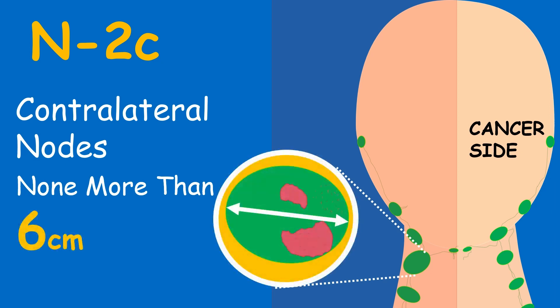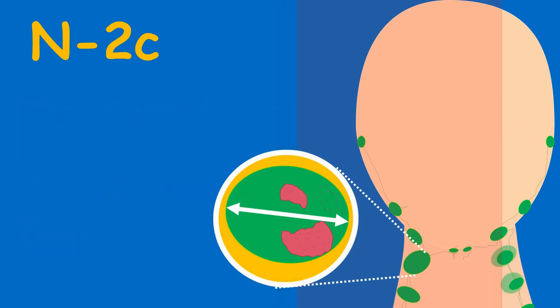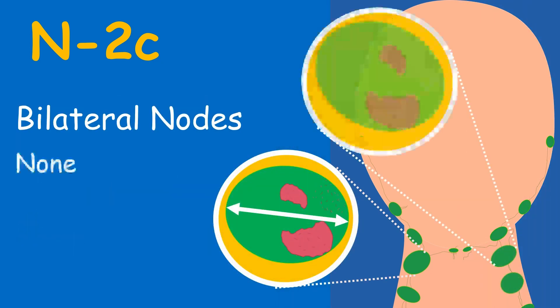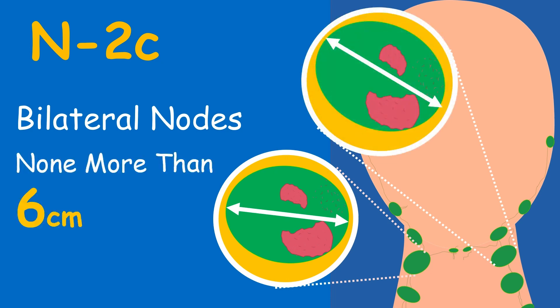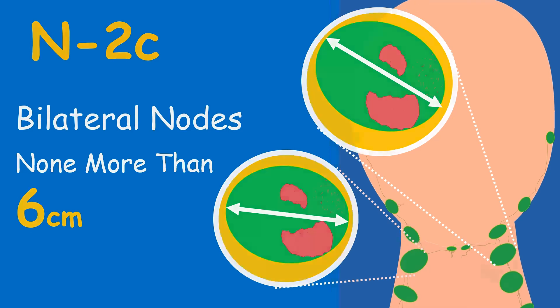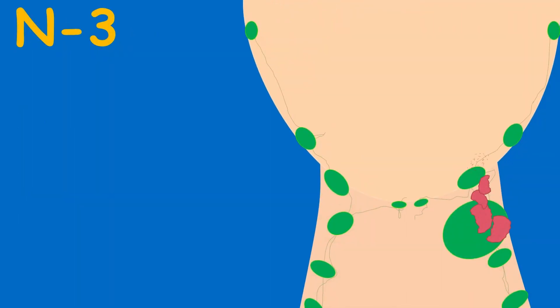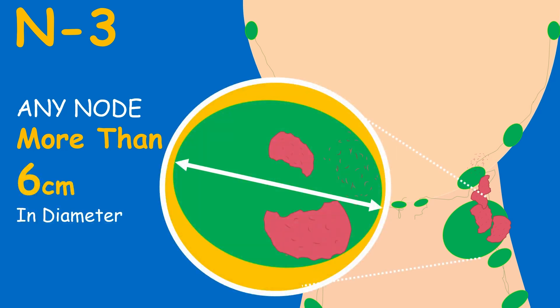In N2C, contralateral nodes, those on the opposite side as the cancer, are involved while none of them is more than 6 centimeters in size. Or in N2C, nodes on both sides may be involved with size no more than 6 centimeters.